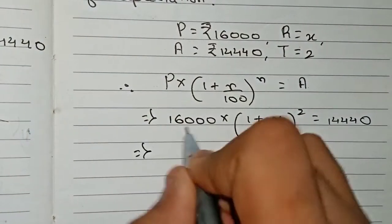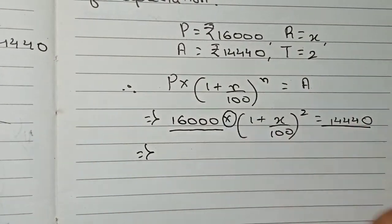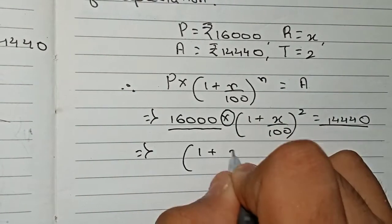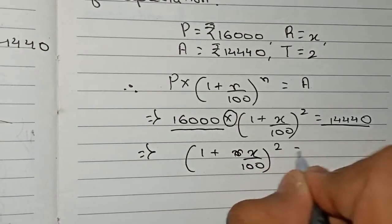So now we take this 16,000 to this side. As it is multiplication here, it will go for division to this side. So (1 plus x/100) to the power 2 equals 14,440 divided by 16,000.